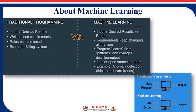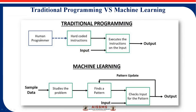In machine learning, you pass the input plus the desired result and the system generates the program. For example, you pass 2 plus 2 and the result 4, and machine learning generates the program. In traditional programming, data and program are the inputs and the system generates the output. In machine learning, data and output are the inputs and the system generates the program.